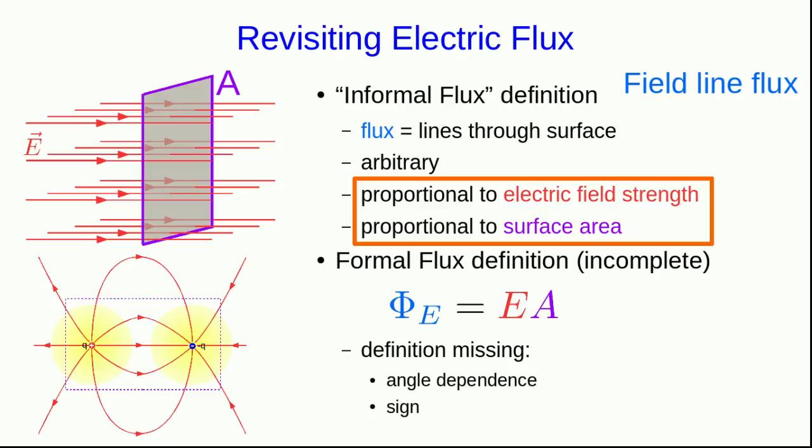Second of all, in our definition, whenever we are working with a closed surface, when the field lines go out of the closed surface, they make a positive contribution to the flux through the surface. And everywhere they enter the surface, they make a negative contribution.